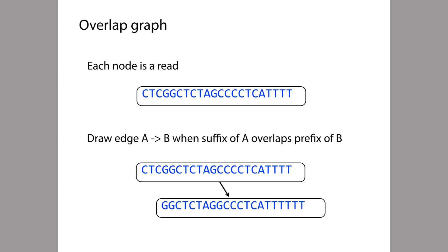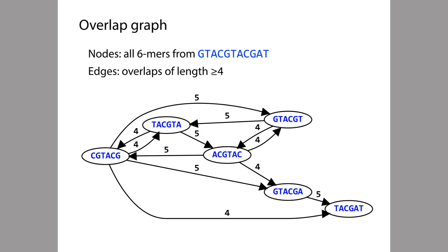That's shown in the example at the bottom of this slide. Now let's see a complete overlap graph for an entire dataset. We start with a genome written in blue at the top and extract every substring of length six — every 6-mer — to create a synthetic set of sequencing reads. Those 6-mers become the nodes of this graph, and we draw a directed edge for every pair of nodes that have an overlap. We need to define what we mean by an overlap.